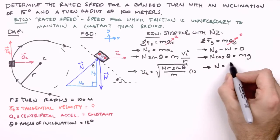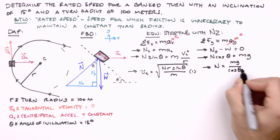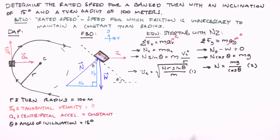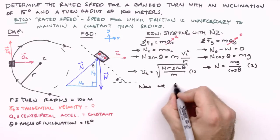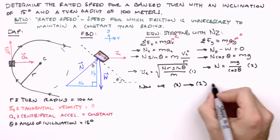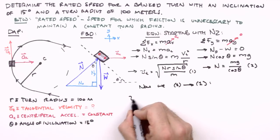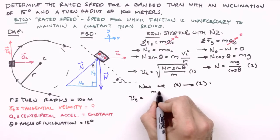Solving for n, we get n equals mg over cosine theta. And we'll label this equation number two.